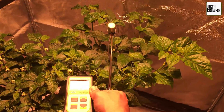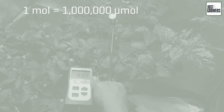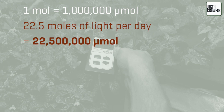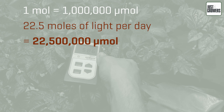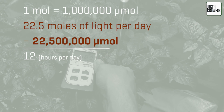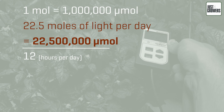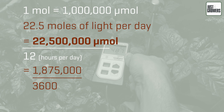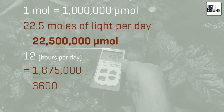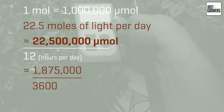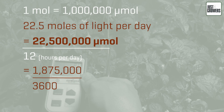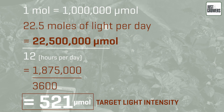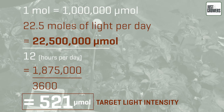The math is straightforward. One mole equals a million micromoles, so 22.5 moles of light per day equals 22,500,000 micromoles. The next step is to divide this number by the number of hours the lights will be on — in this case 12 — and then divide the result by 60 squared, or 3,600. This series of divisions takes us from moles per day to micromoles per second. Our target light intensity is 521 micromoles.